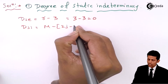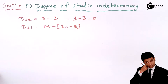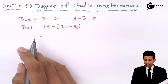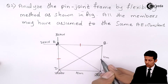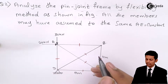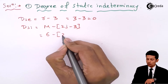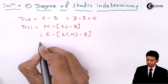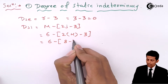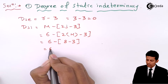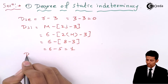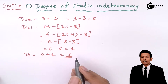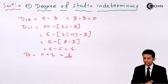Next we check DSI, which is m minus 2j minus 3. Counting the members: 1, 2, 3, 4, 5, and 6 — so m equals 6. Then 6 minus 2 into 4 joints minus 3 gives 6 minus 8 minus 3, which equals 6 minus 5 equal to 1. So total DS equals 0 plus 1, giving us one redundant member.